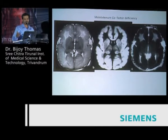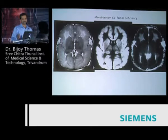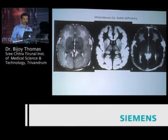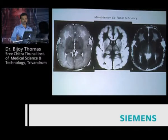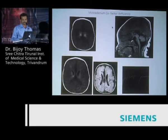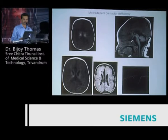Molybdenum cofactor deficiency—I want to show these cases because these are differentials we encounter. Just from cortical edema we may diagnose diffuse hypoxic ischemic insult, or infections like HSV2 or streptococcal infections. But there are metabolic conditions—molybdenum cofactor deficiency—which can be very well treated by supplementing this cofactor, which is readily available. If you don't treat these cases, the brain ends up looking like end-stage PVL, and this becomes a differential diagnosis for end-stage hypoxic ischemic damage.